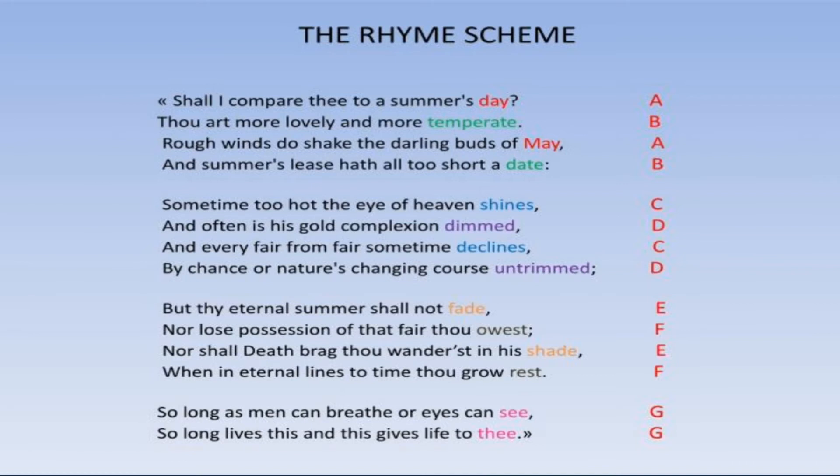In the third quatrain, the rhyming words are fade, shade, and owst, or rest. So the rhyming scheme is EFEF. In the last couplet, see and thee are the rhyming words. So the rhyming scheme is GG.